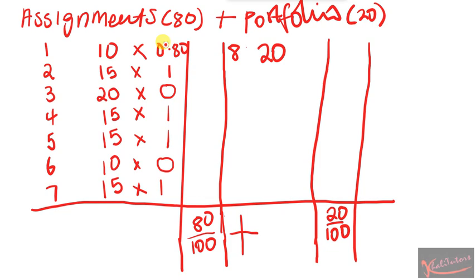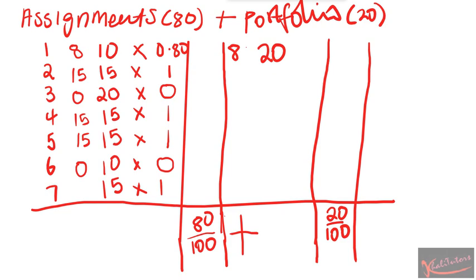Using the calculator: 10 times 0.8 is obviously 8. I'm just going to write the answers here. The answer for 10 times 0.8 is 8. Then 15 times 1 is 15. 20 times 0 is 0. 15 times 1 is 15. 15 times 1 is 15. 10 times 0 is 0. And 15 times 1 is 15.